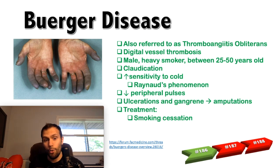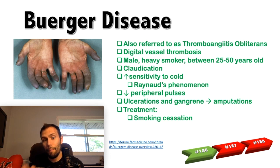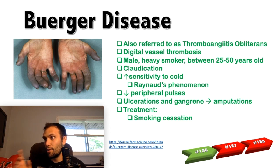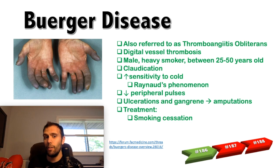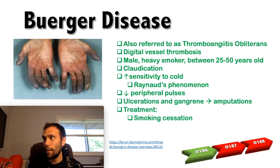For vasodilators in Buerger's disease, you can give prostaglandin analogs or cilostazol, a phosphodiesterase 3 inhibitor that increases cAMP, inhibits platelet aggregation, and also inhibits myosin light-chain kinase, causing vasodilation. You can also give calcium channel blockers like nifedipine to decrease vasoconstriction, or treat with hyperbaric oxygen for its vasodilatory effect. But on a board question, the big answer is smoking cessation.